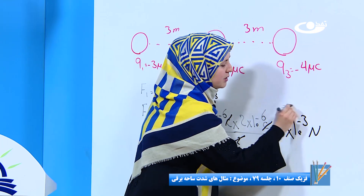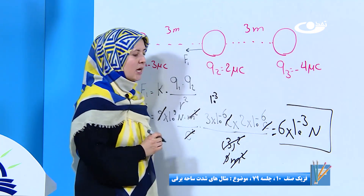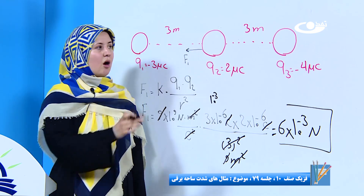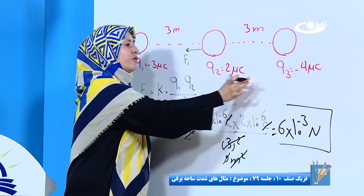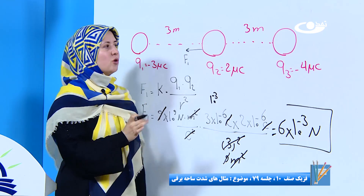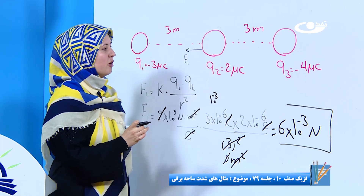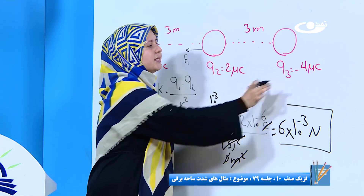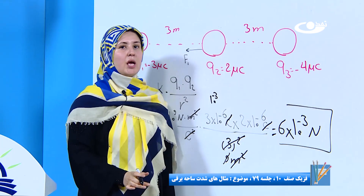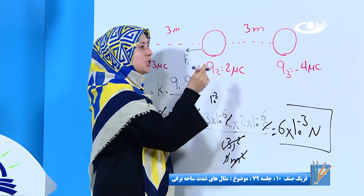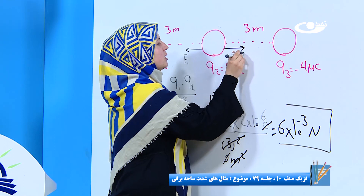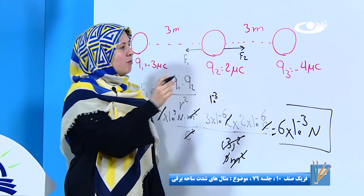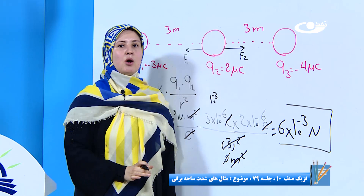واحد اندازه‌گیری هم چی می‌شه؟ نیوتن. ما مقدار قوه اول را پیدا کردیم. حالی ببینیم که ذره دوم و ذره سوم چه قوه‌ای بر اینها موجوده. ذره دوم ما مثبت، ذره سوم منفی. باز هم قوه از نوع جاذبه. پس جهت قوه دوم ما به این سمت می‌باشه. ما جهت را پیدا کردیم.